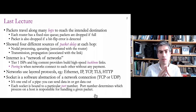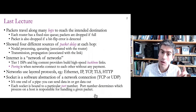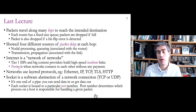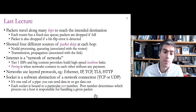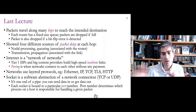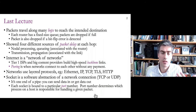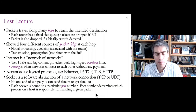Each hop involves a router that receives the packet, queues it up, and forwards it further along toward the final destination. Each router has a queue — a memory for storing packets that haven't been sent yet. That queue can fill up, and when it does, new packets that come in can't be stored anywhere, so they're dropped. The internet is also unreliable because packets can be dropped due to congestion or bit errors detected during transmission.